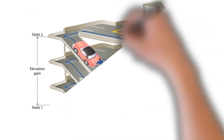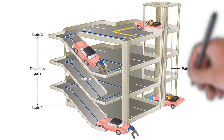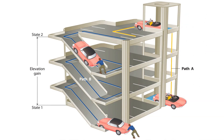Let's learn this concept with specific and simple examples. In the first example shown on screen, there are two paths — path A and path B — to raise the car from the first floor to the fourth floor. The elevation gain is defined as the distance between the initial and final states. Here, the elevation gain is three floors, which is exactly the same in both cases. Therefore, elevation gain is path independent — no matter whether you choose path A or path B, you end up with the same elevation gain. So elevation gain is a state function.